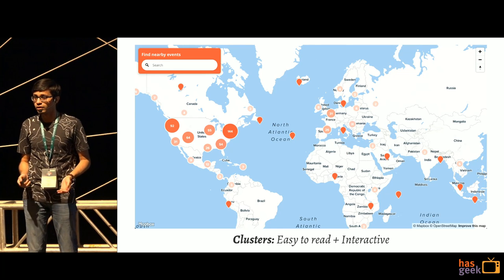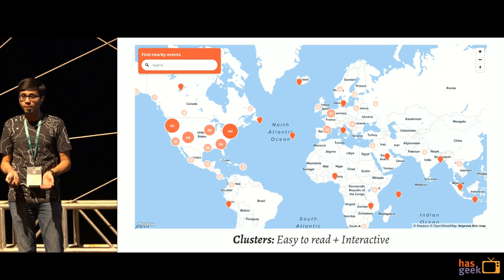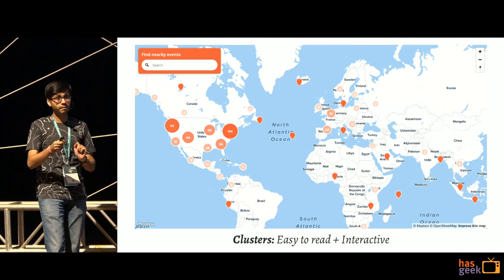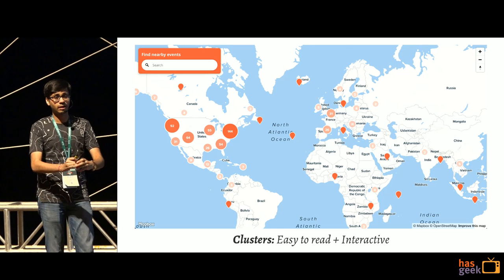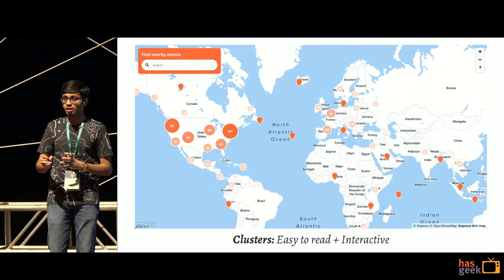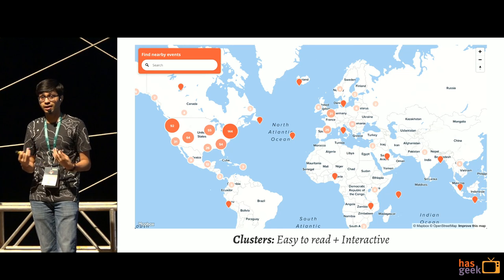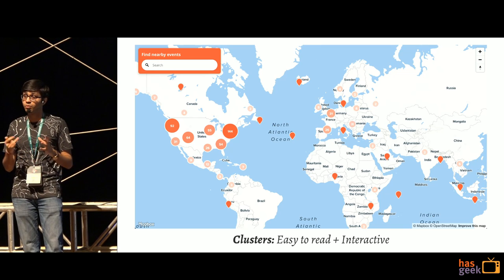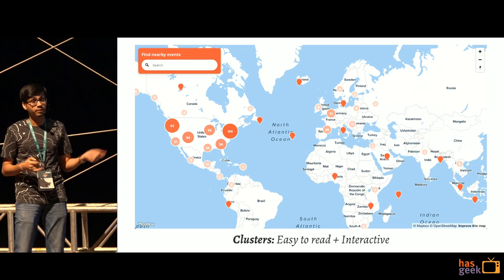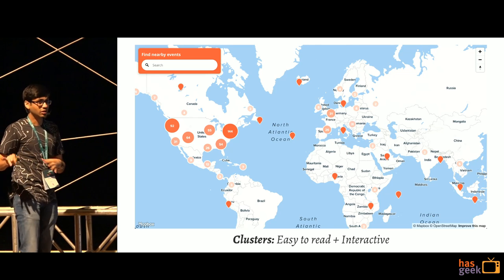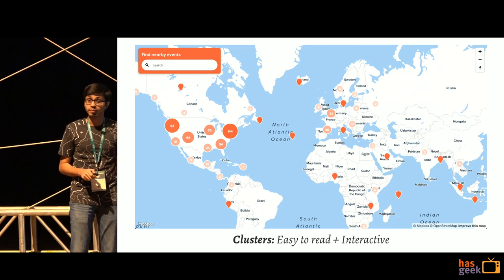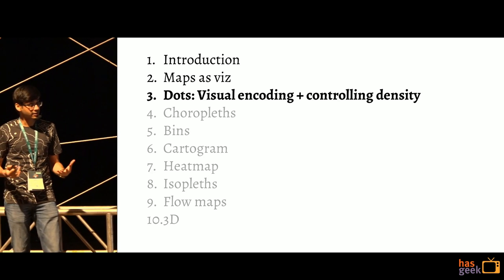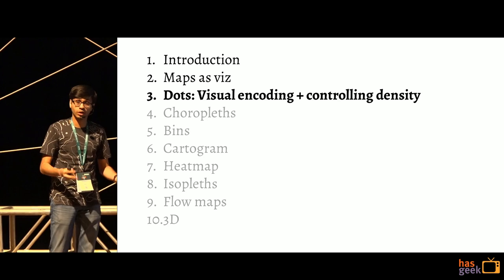A very easy solution to the overplotting problem is clustering — we still show individual dots, but when too many are nearby we cluster them into a bigger dot. You can change clustering based on size and add subtle effects like color highlights. This is a great example from the Women's March — using clustering effectively to show concentration while still preserving individual data points.